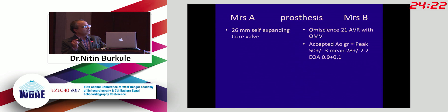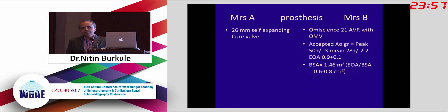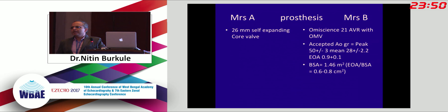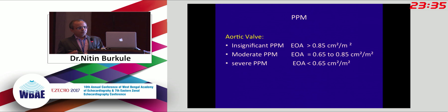Most importantly, before we touch the patient with a prosthetic valve, we should know the type and size of the prosthesis, because the moment we start getting the gradients we get confused. Many metallic prosthetic valves are notorious for residual gradients. Mrs. A has an expanded self-expanding CoreValve of 26 mm, which is a good size. Mrs. B has an Omniscience 21 AVR — she went through the Rajiv Gandhi Arogya Yojana so she didn't get a latest-generation bileaflet. The accepted gradients for a 21 Omniscience AVR are peak 50 ± 3, mean 28 ± 2, and the manufacturer's effective orifice area is around 1.